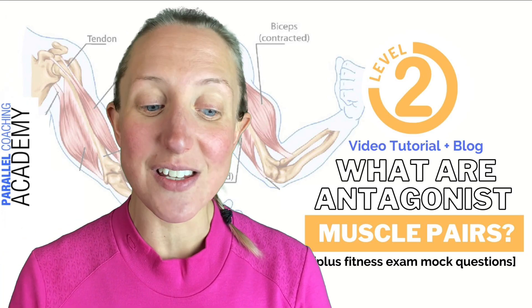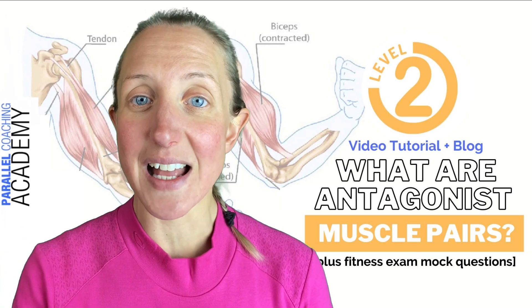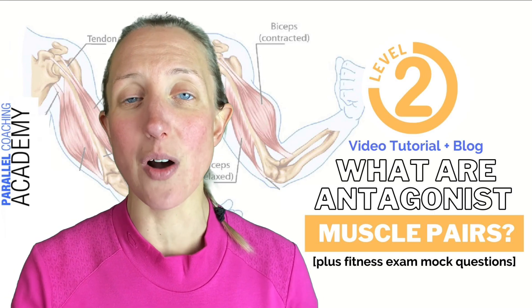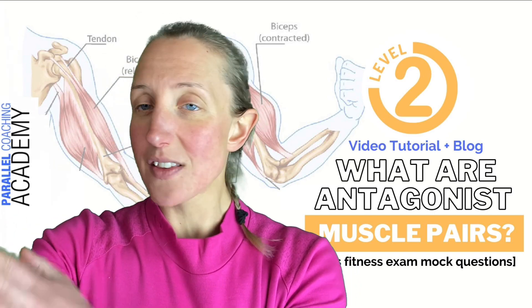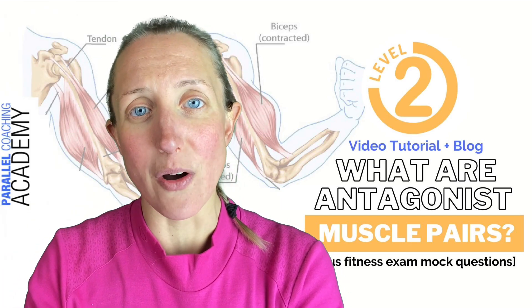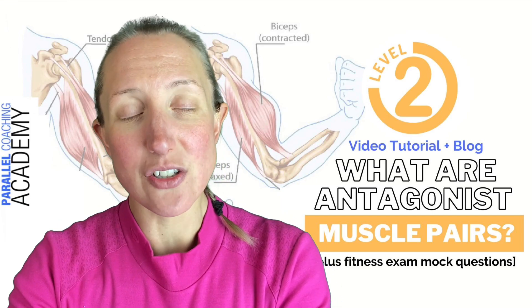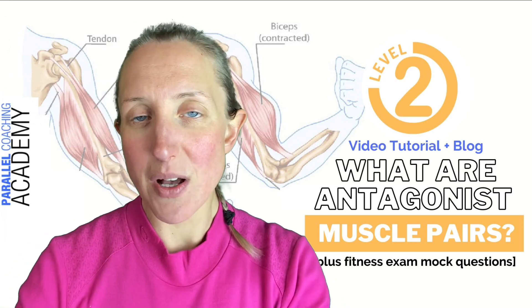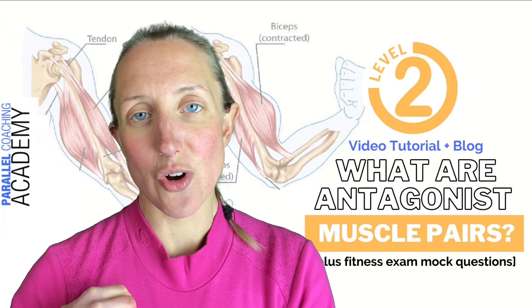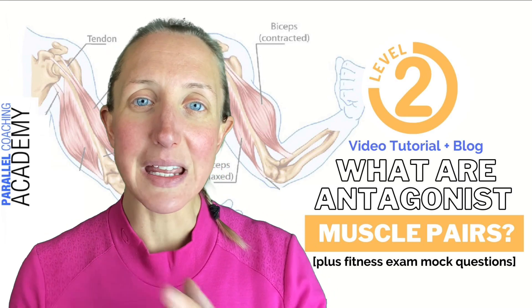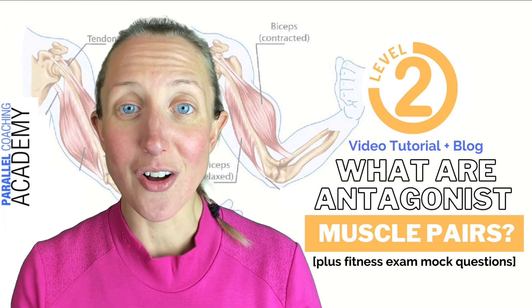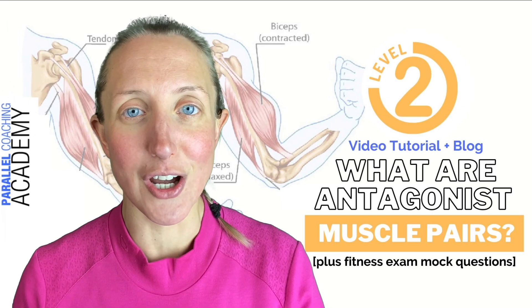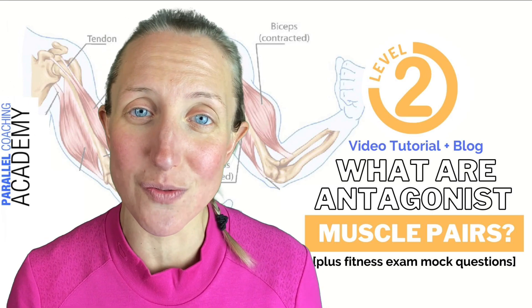We're going to explore what each of these different pairings are so you know what the agonist antagonist pairs are, and you'll notice that they become either side of a joint. For example, the bicep and the tricep both cross the elbow — one is in front of the elbow and one is behind it, so they do opposing actions. You can always work out which the pairings are as long as you know what joint actions are occurring when that muscle is contracting, which shows the importance of knowing your anatomy and physiology.